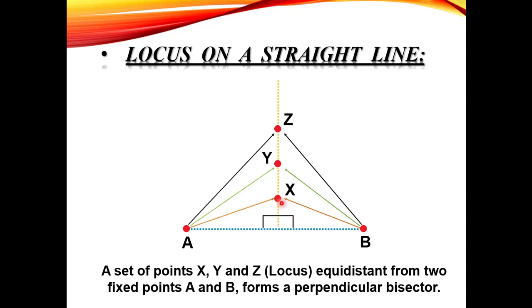So, the Locus of points equidistant from two fixed points forms a Perpendicular Bisector — a line that makes a 90-degree angle and divides the base AB into two equal halves. Locus is a set of points equidistant from one or more fixed points. We have seen two conditions: one with a Circle, and one with a Straight Line.